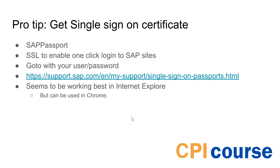One thing that's really useful if you don't have it already is the SAP Passport, which is like an SSL certificate that enables you to do one-click sign-on. This is really useful when logging in because you just get a pop-up saying 'is this the user you want to log in with?' - say yes and you log in. You just go to this URL, click download certificate, deploy it in your keystore, and then you can use it from all your different browsers when accessing CPI.